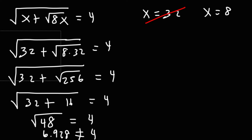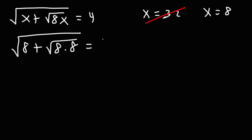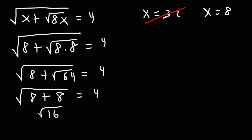Now let's check x equals 8. We have 8 plus the square root of 8 times 8, which equals 4. 8 times 8 is 64, and the square root of 64 is 8. Then 8 plus 8 is 16, and the square root of 16 is 4. So this works, which means x equals 8 — that's going to be our answer.